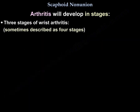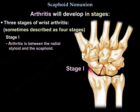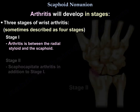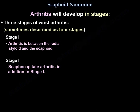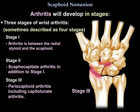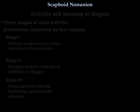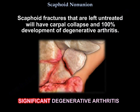There are 3 stages, although some books describe 4. In stage 1, arthritis develops between the radial styloid and the scaphoid. Stage 2 adds scaphocapitate arthritis. Stage 3 involves peri-scaphoid arthritis and capitolunate arthritis. Scaphoid fractures left untreated will have carpal collapse and 100% development of degenerative arthritis.